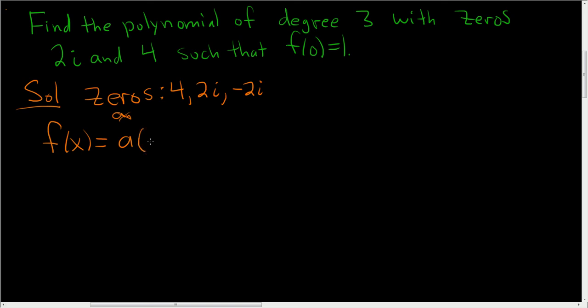It turns out that every single polynomial factors as x minus zero, so x minus 4, times x minus zero, so x minus 2i, times x minus zero, so x minus a negative number, so x plus 2i.